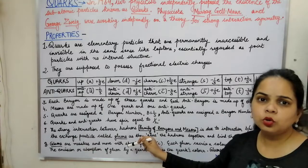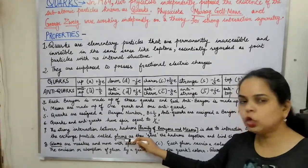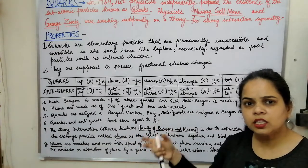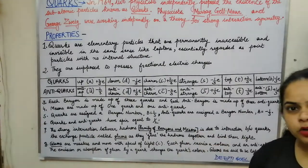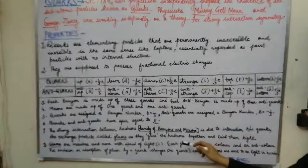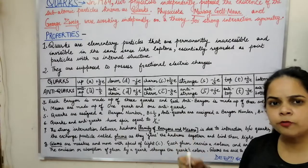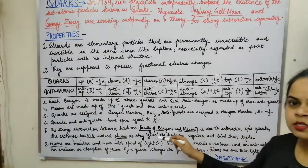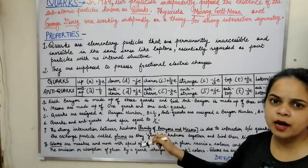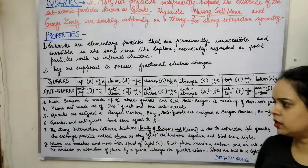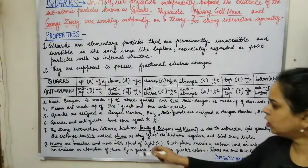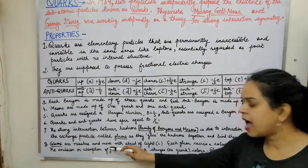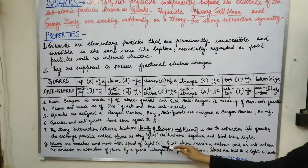The exchange medium is the gluons. As the word suggests, 'glue' means it is a sticky substance — these gluons will stick the hadrons together and bind them. They are responsible for tightly binding the particles together. The gluons are the intermediate exchange particles that bind the hadrons together. Gluons are massless particles; they do not have any mass and move at the speed of light.